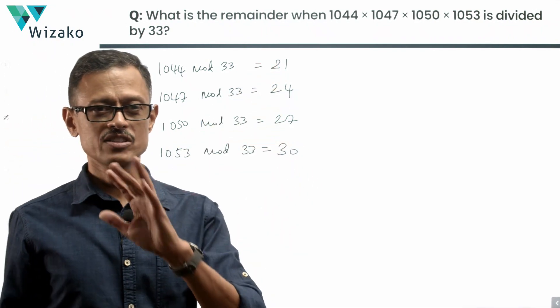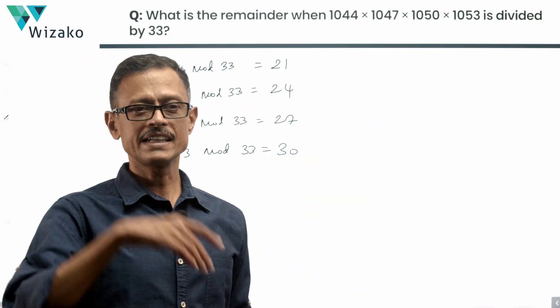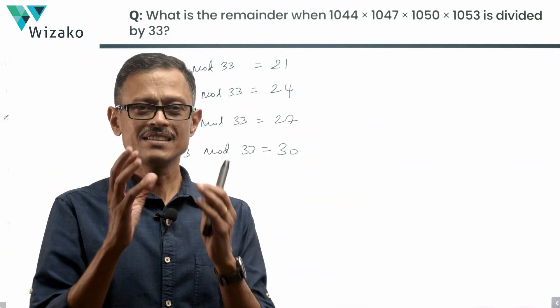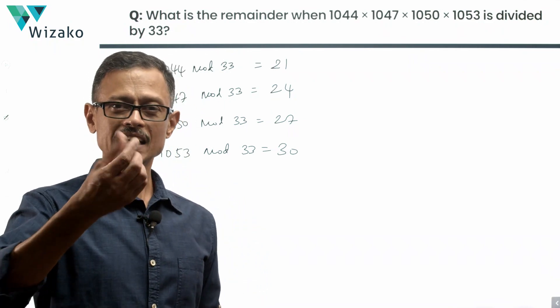The product of these four numbers should give us the value, and we obviously know that's going to be greater than 33, so we'll divide that by 33 and find the answer. This is still a cumbersome calculation.